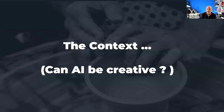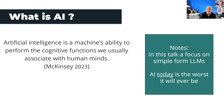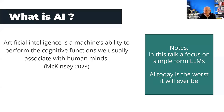The context here: the first version of this talk looked at whether AI can be creative. Brian and I both feel strongly that it can. AI, in this context, is about computers doing things we usually associate with human beings. We're focusing on large language models. And it's important to remember — everything we're looking at today is the worst AI is ever going to be; it will only get better.